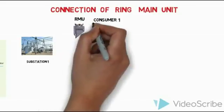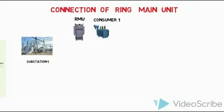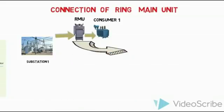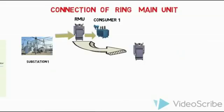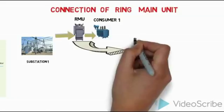We need to put a ring main unit here. The supply from the substation first reaches the ring main unit, then the ring main unit connects to a transformer, and the transformer gives supply to the consumer. After that, the ring main unit has a loop — a T-connection — and that T-connection ring main unit sends supply to another ring main unit. That next ring main unit connects to the next transformer for the next customer.